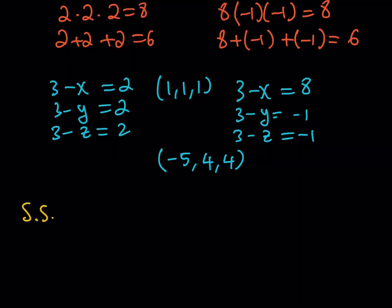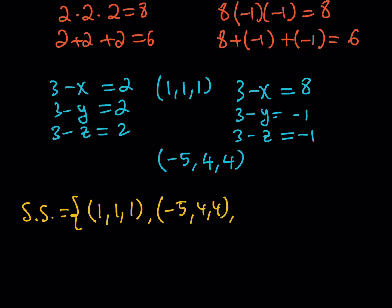So our solution set is: (1, 1, 1), and all permutations of (−5, 4, 4). Since there are 3!/2! = 3 permutations of the latter, the full set is (−5, 4, 4), (4, −5, 4), and (4, 4, −5).